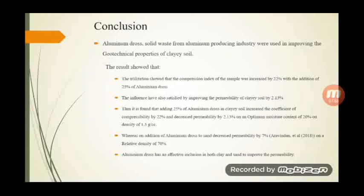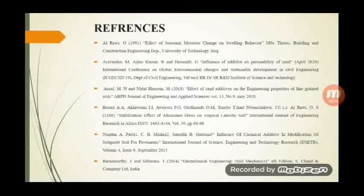From the results, the following conclusions were drawn. The influence of the additive made an effective inclusion. We also carried out the same study by adding aluminum dross to a sand sample — in that case, the permeability reduced by 7% at a relative density of 70%. From these results, we strongly conclude that aluminum dross will make a major impact in future geotechnical works. We would like to thank our guide and other faculty members for their full support, and we are also thankful to our reference persons. Thank you for watching.